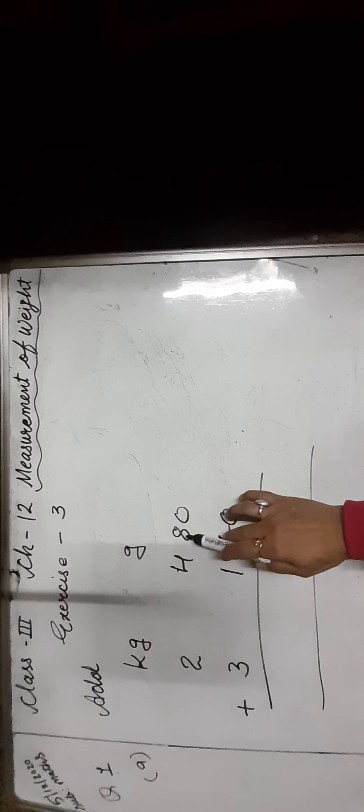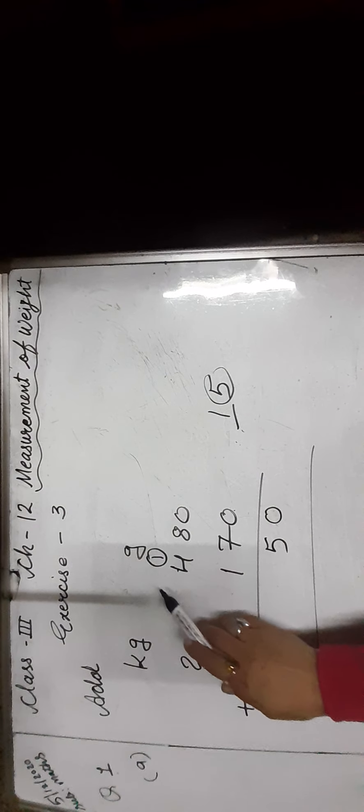We simply add in the same way as numbers. Start from the grams column at the 1's place: 0 plus 0 is equal to 0. Then 8 plus 7 is equal to 15. We write 5 in the 10's place and carry 1 over to the next place. Now add 1, 4, and 1 which is equal to 6.